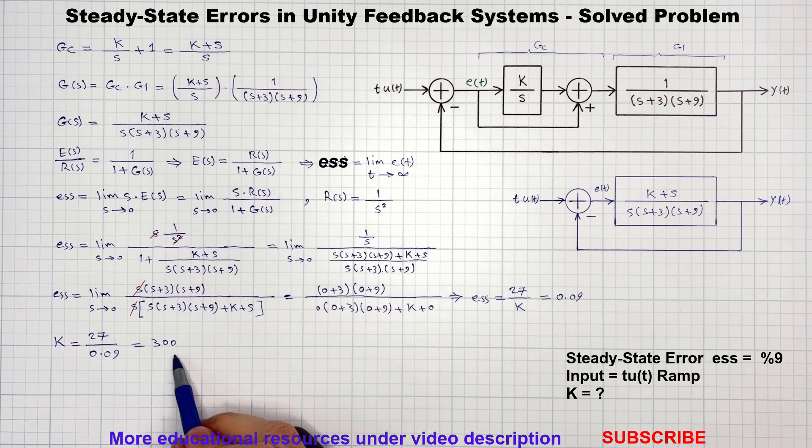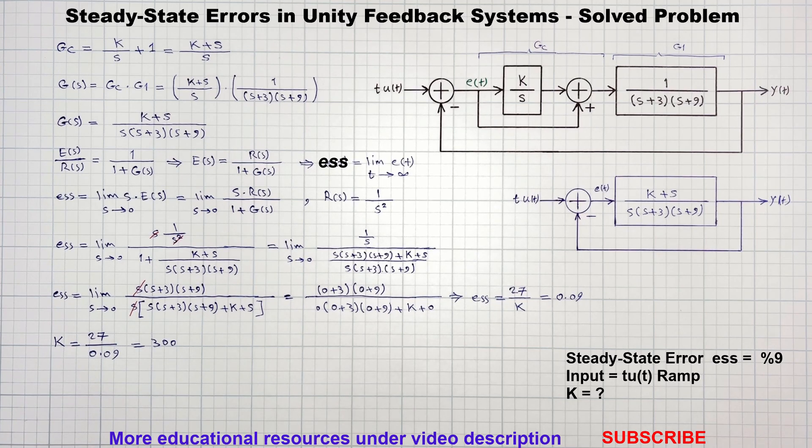So the value of K that ensures the steady state error for a unit ramp input is exactly 9% will be 300. Thanks for following along. You can find more quiz and solved problems on this topic in the post section of my channel.